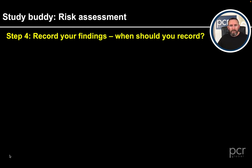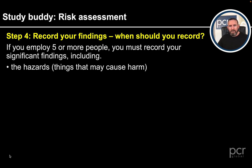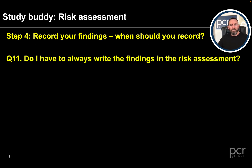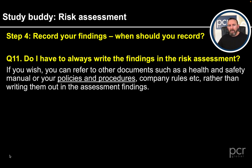Step 4 — Record your findings: If you employ five or more people, you must record your significant findings, including the hazards, who might be harmed and how, and what you are doing to control the risks. Do not rely purely on paperwork, as your main priority should be to control the risks in practice.